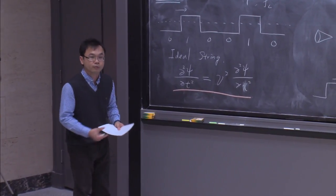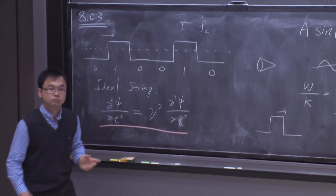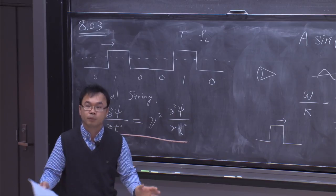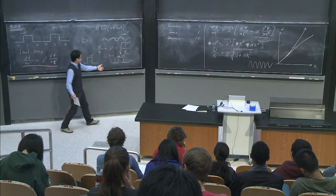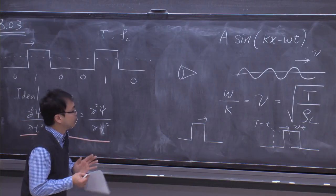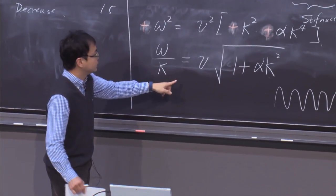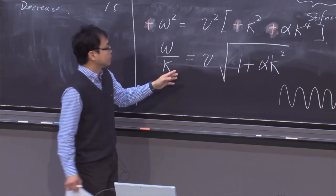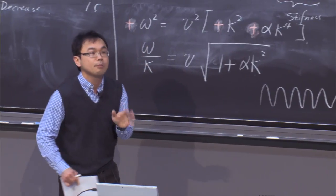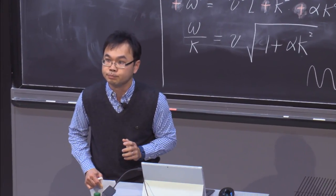What does this mean for our goal of sending information? We can send a square pulse and let it propagate. A square pulse decomposes into many harmonic waves. Before, all wavelength components traveled at the same constant speed — so the square pulse worked. Now we are in trouble: ω/k depends on wavelength, so different components of the square pulse propagate at different speeds.